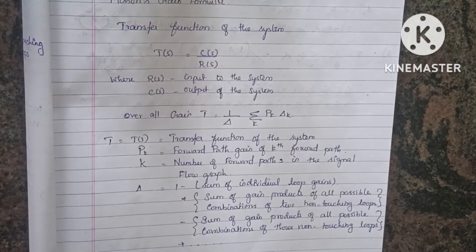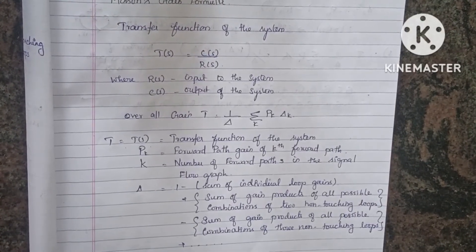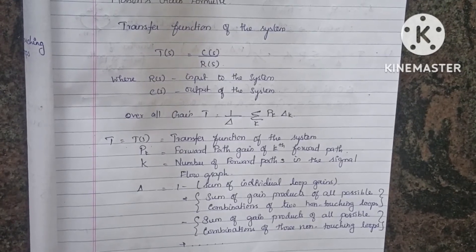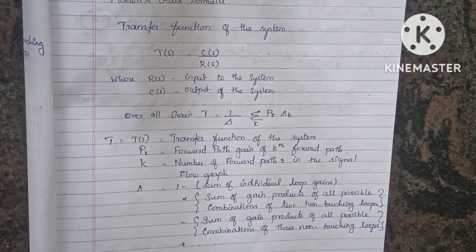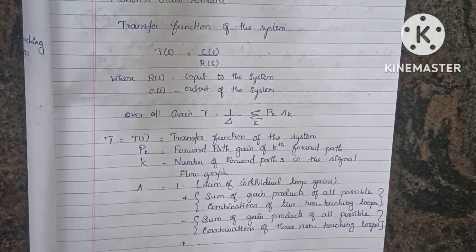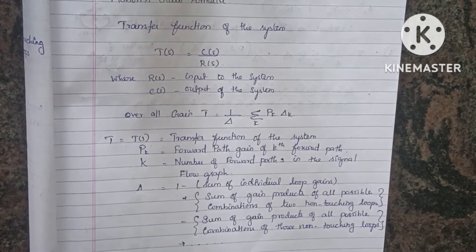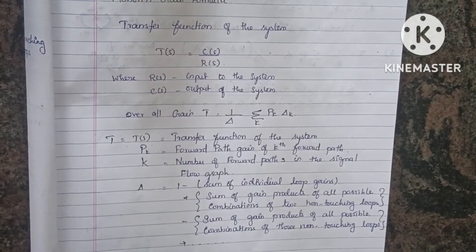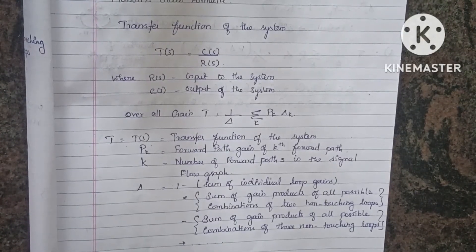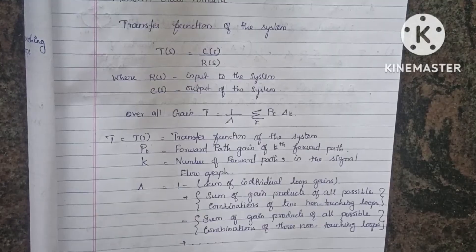Delta equals 1 minus the sum of individual loop gains, plus the sum of gain products of all possible combinations of two non-touching loops, minus three non-touching loops, minus four non-touching loops, and so on extended to infinity.